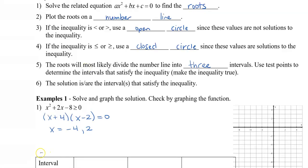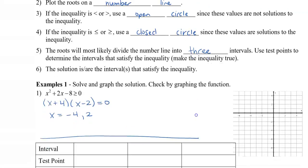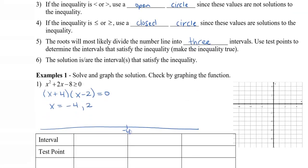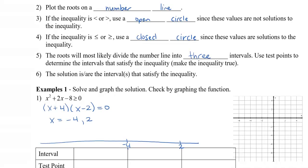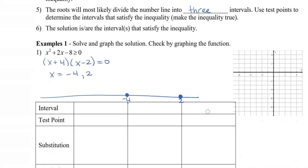So we're going to plot these roots on a number line. I'm going to place negative 4 and 2 on the number line. Because this is greater or equal to, I'm going to put a closed circle. The roots divide my number line into three parts, just like what we saw in our investigation. So my three intervals are: x less than or equal to negative 4; negative 4 less than or equal to x less than or equal to 2; and x greater or equal to 2.